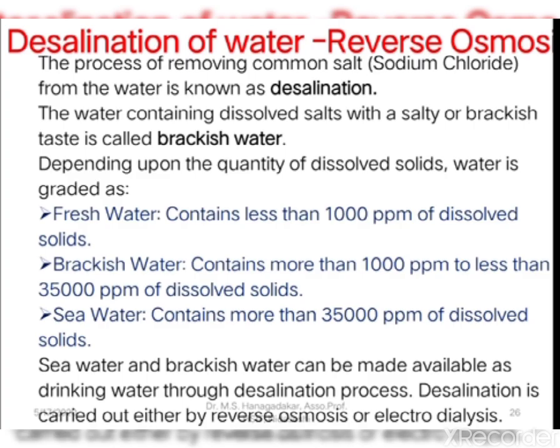As we know, fresh water availability is very limited. Hence, we need to use sea water or brackish water and convert it into potable or drinking form. This is done by the technique called desalination. Sea water and brackish water can be made available for drinking through the desalination process, which is carried out either by reverse osmosis or by the electrodialysis process.